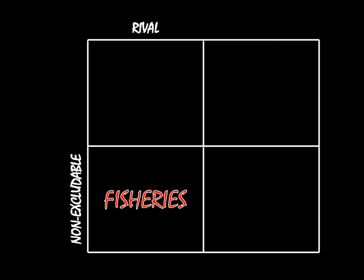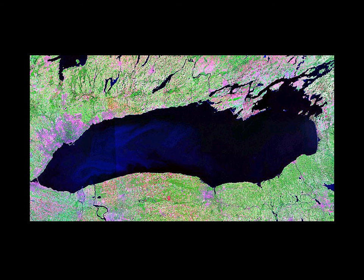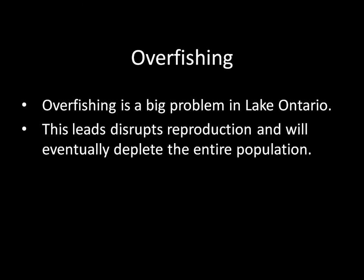To make this a little bit more concrete, let's look at a satellite image of Lake Ontario. Just to orient yourself here, this is Toronto up here, we have Niagara Falls down here, and the University of Rochester, where I go to school, is about right there. In general, Canada is up north, New York is down south. Like any other lake with fish in it, Lake Ontario has a big problem with overfishing.